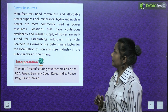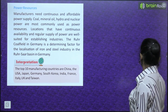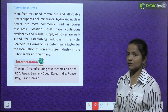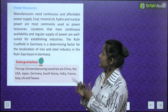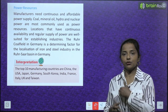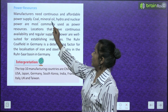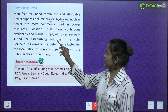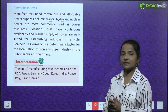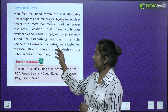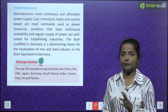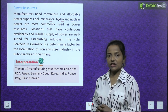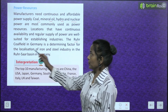Next comes power resources. Manufacturers need continuous and affordable power supply — 24/7. Coal, mineral oil, hydro and nuclear power are most commonly used as power resources. Locations that have continuous availability and regular supply of power are well suited for establishing industries.